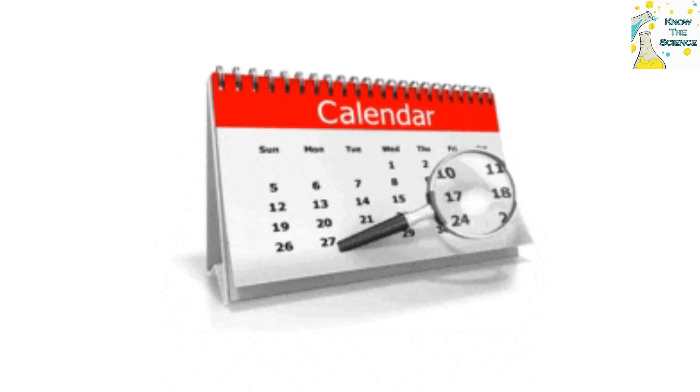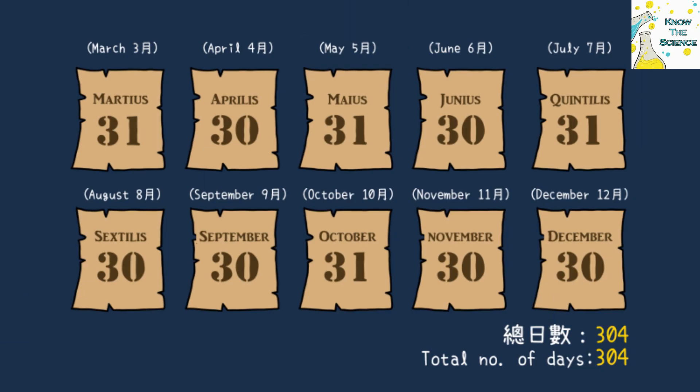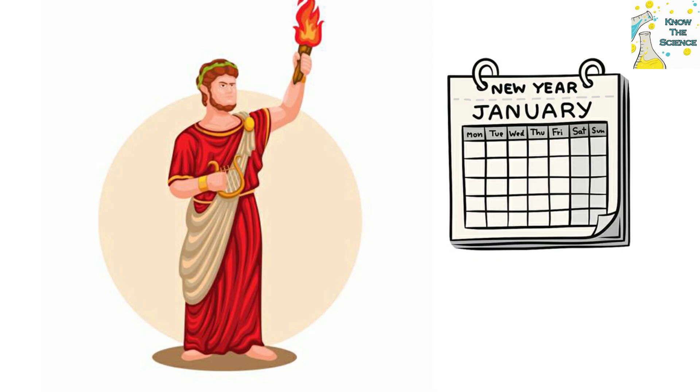Blame it on Roman superstition. The Gregorian calendar's oldest ancestor, the first Roman calendar, had a glaring difference in structure from its later variants: it consisted of 10 months rather than 12. In order to fully sync the calendar with the lunar year, the Roman king Numa Pompilius added January and February to the original 10 months.